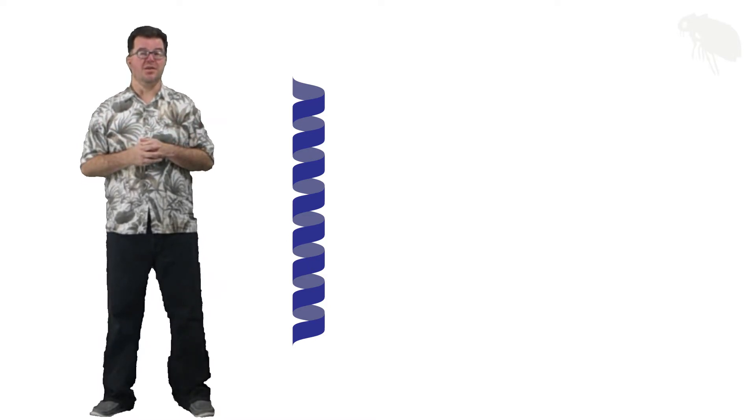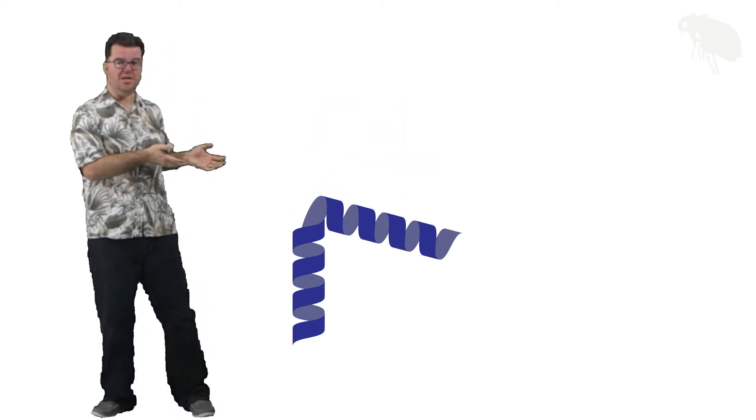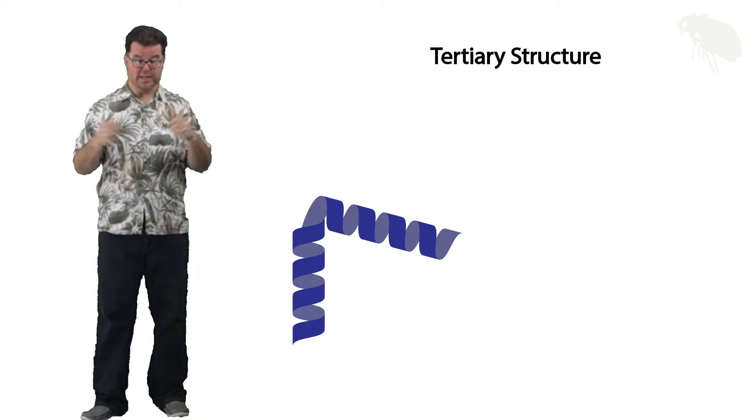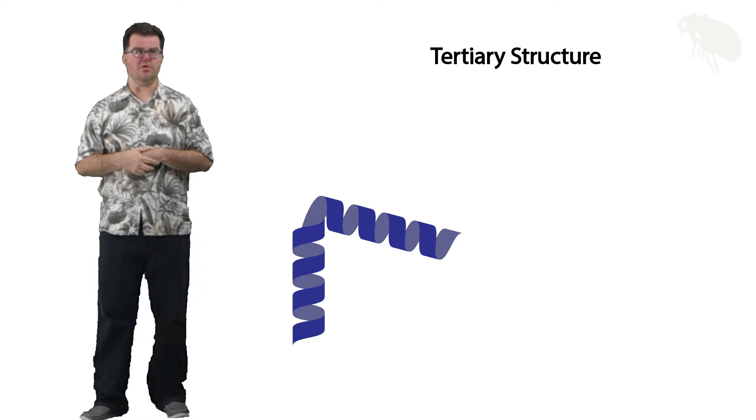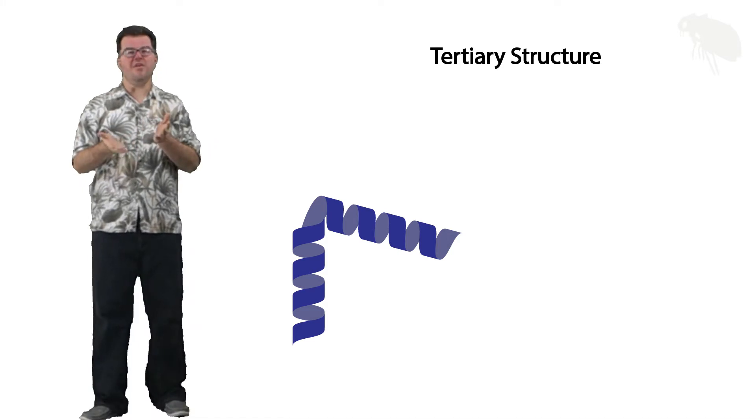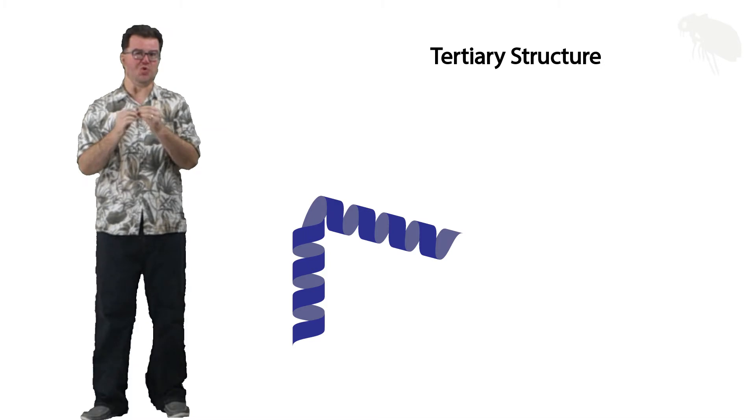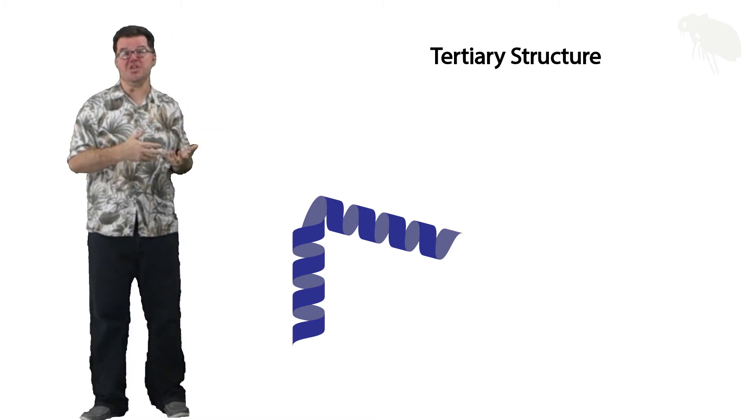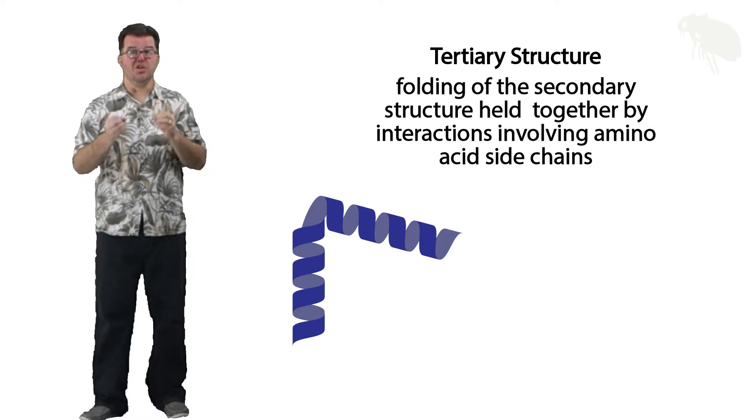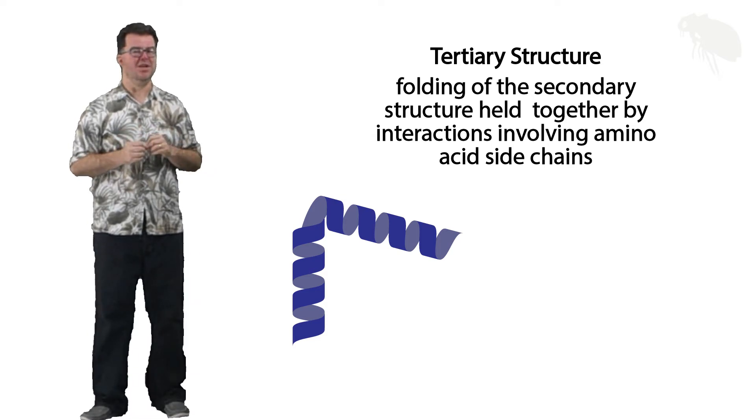It should come as no surprise, we're going to keep on folding. Tertiary structure is folding of the secondary structure. If you've ever played around with folding paper, the more times you fold it, the more force it takes to hold the folds together. The same thing is now going to be true here at the tertiary level. We need more forces involved to hold this together, and all of those forces are going to involve the side chains.